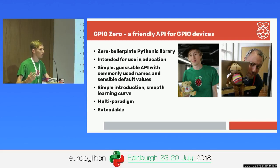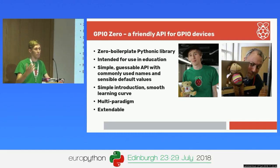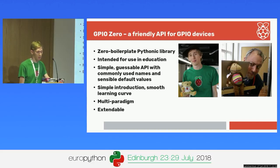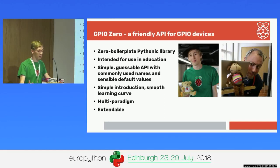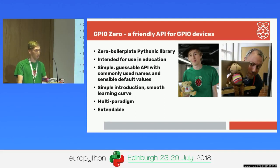The same applies here with GPIO. Rather than writing out or copy-pasting an implementation of how to read something complicated like an ultrasonic distance sensor - where you send off a signal, wait for a signal back on a different pin, read pin values and do calculations - you actually just create an instance of a distance sensor device and read its value or distance. It was intended for use in education because we used to teach with a low-level library, teaching teachers how to do physical computing. With a simple, guessable API, commonly used names, and sensible default values, it's a simple introduction that allows you to progress along a smooth learning curve.